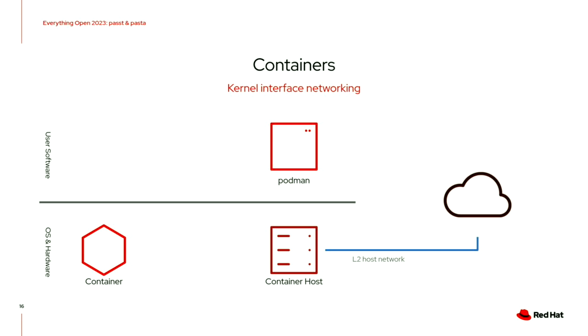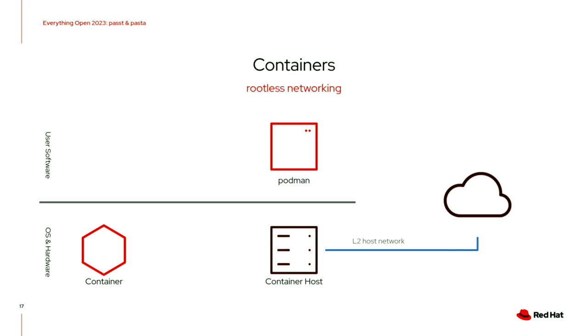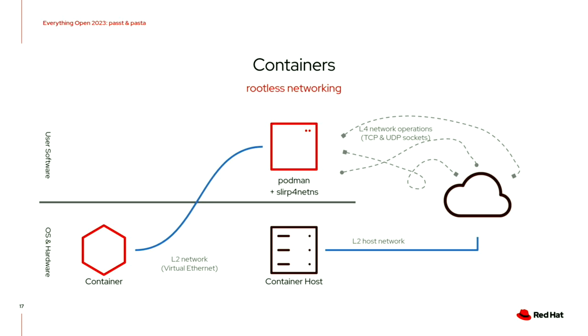VMs are a bit passé these days — it's all about containers. Podman, or Docker, sets up a virtual Ethernet device between your container and the host using a VETH device. But this needs root on the host, or at least some kind of raised privilege. More recently, Podman has added an option for what they call rootless networking. How can you give a container network access if you don't have root on the host? It's Slurp — specifically a variant called Slurp for NetNS, hooked up to talk to a network namespace like you have in a container rather than a VM.